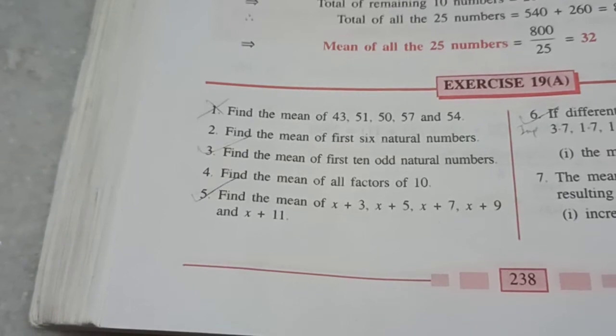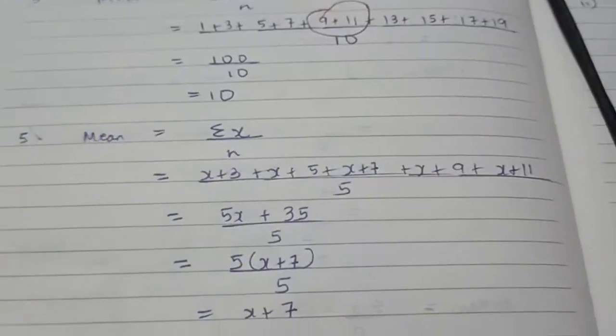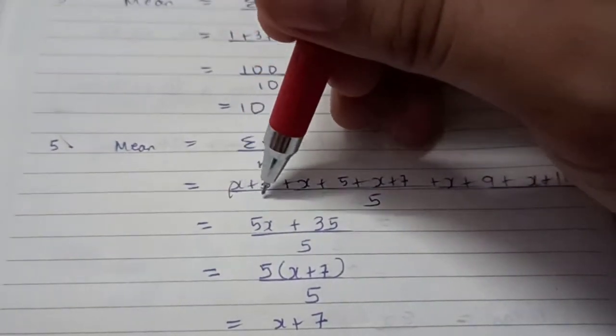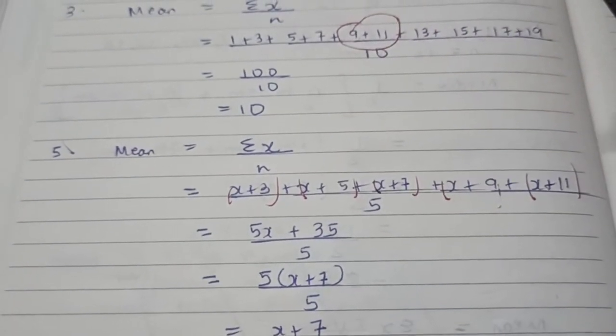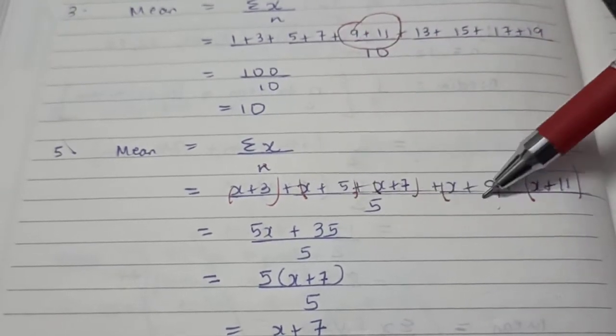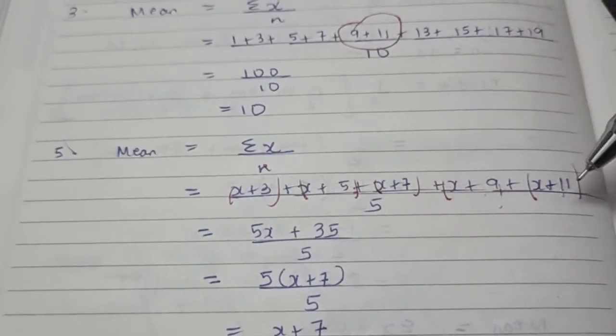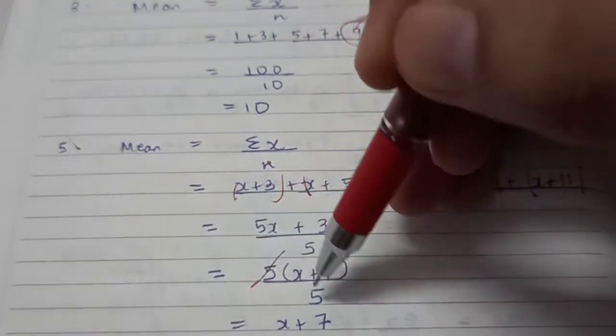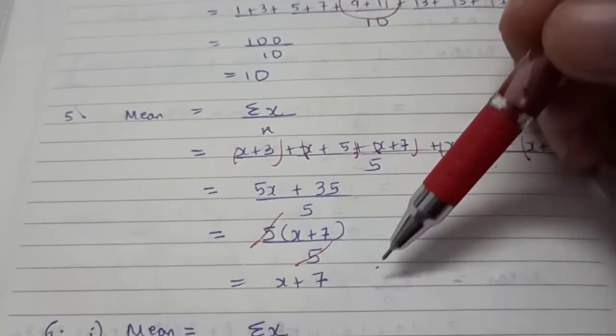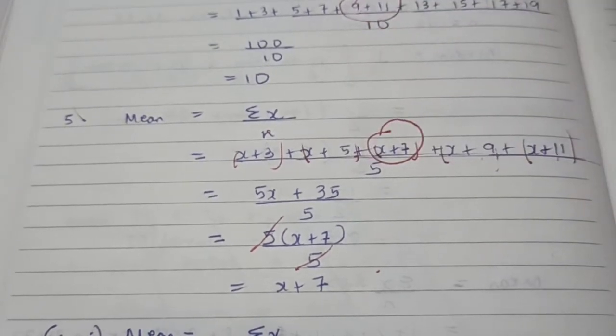Now the fifth sum. Again, they have given some data and we have to find the mean. Same formula. So we'll add the values given: x plus 3, x plus 5, x plus 7, x plus 9, x plus 11. Totally there are 5 pieces of information given, so upon 5. Add all the x's together, 5x, add all the numbers together, 35. They are unlike terms so we can't add them. Remove 5 common so that 5 and 5 can be cancelled. And the answer is x plus 7, which interestingly again here is the middle term out of the 5 values.